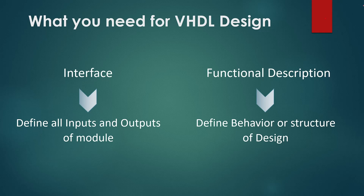Today we will be creating a basic VHDL module including the interface and the functional description. You will be needing two main items for creating a design in VHDL. First is to define all the inputs and outputs of the design — we call this the interface of our module or digital system. We need to write VHDL code for all the inputs and outputs to tell the tool about the interface of our module.